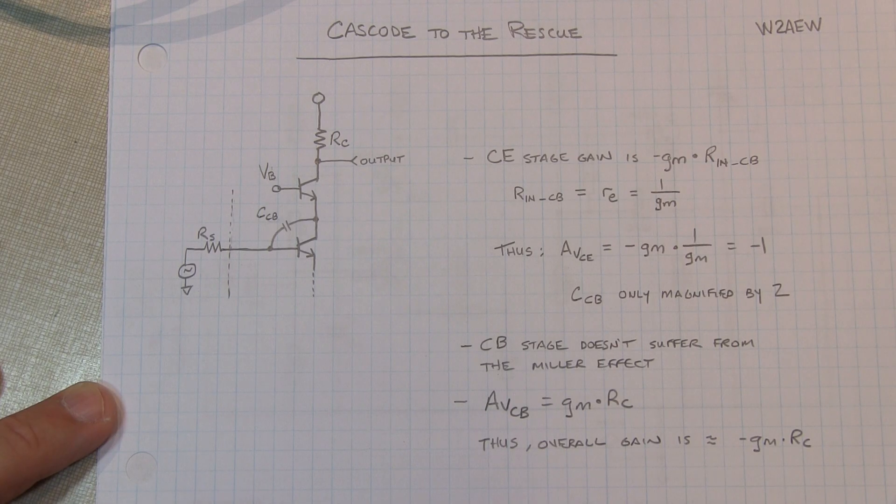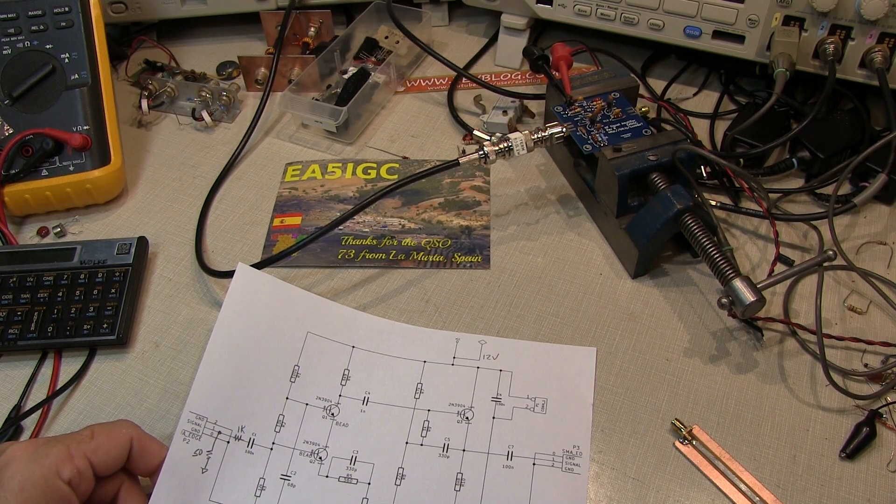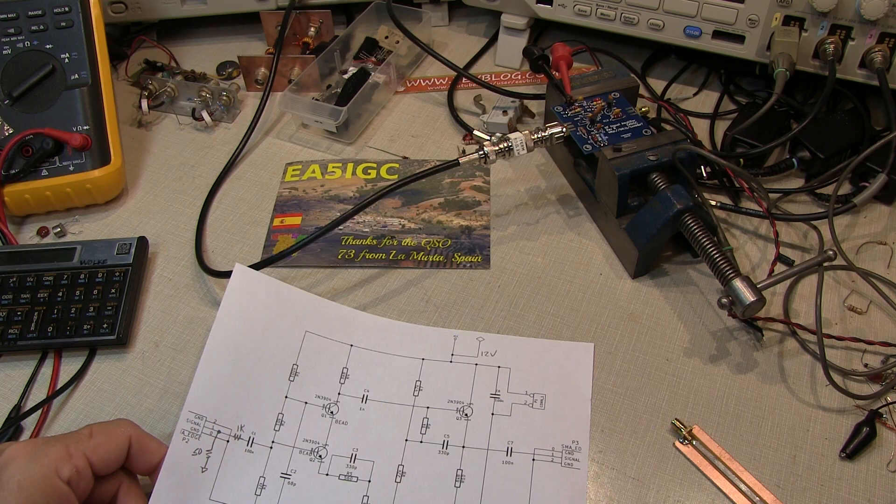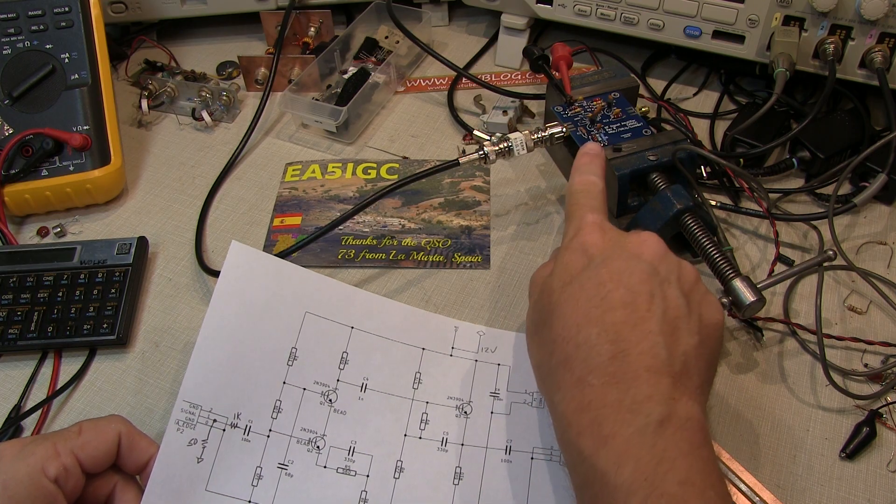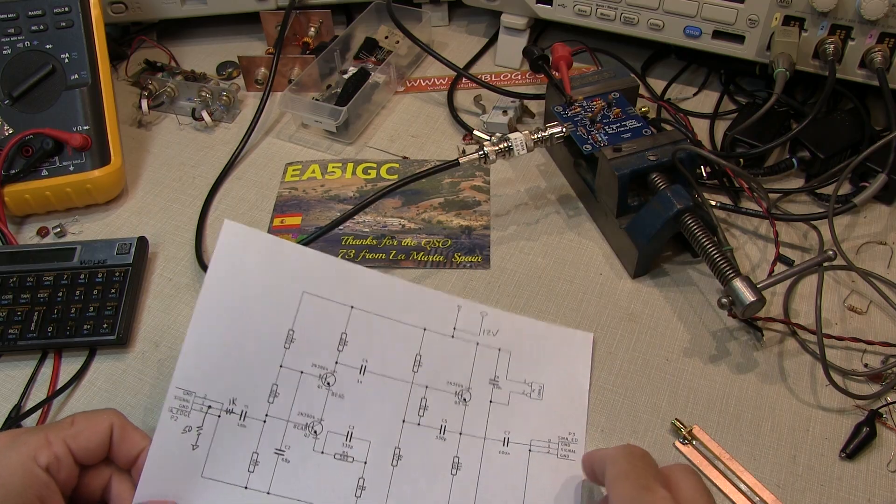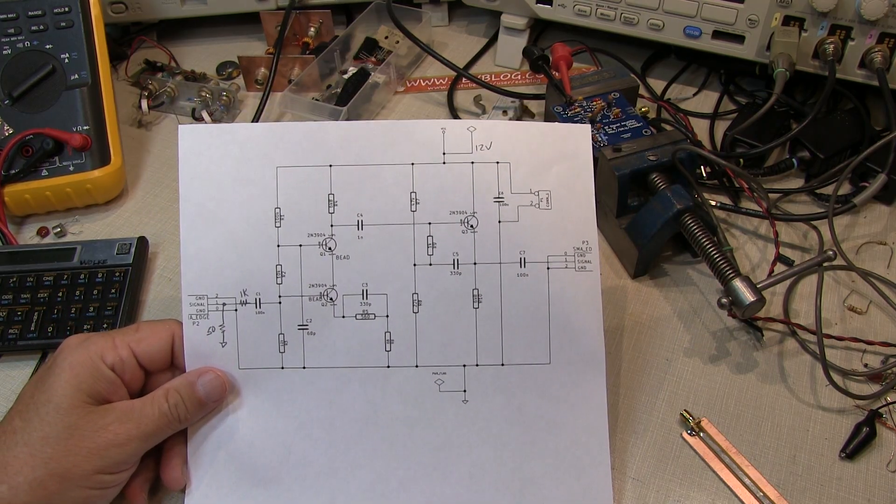So let's make some measurements on an amplifier and take a look at this effect. This video was kind of prompted by my friend and YouTube subscriber, Marcus, EA5IGC. He had sent me this cascode amplifier board, and this is a schematic of that board here, and asked me to do a video on cascode amps.